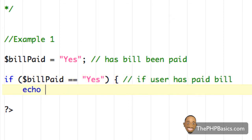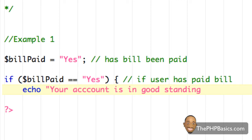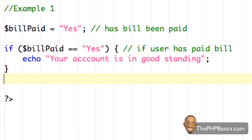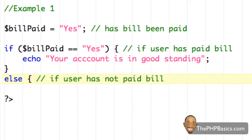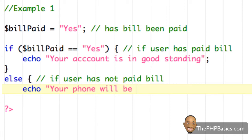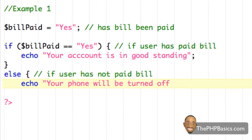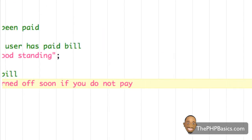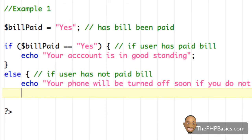I close the parentheses, open a curly brace, and add a comment: if user has paid bill. Then on a new line I write: echo "Your account is in good standing.". Then I close the curly brace and start the else portion. I open another curly brace, add a comment: if user has not paid bill, and on a new line write: echo "Your phone will be turned off soon if you do not pay.". Then close the curly brace.